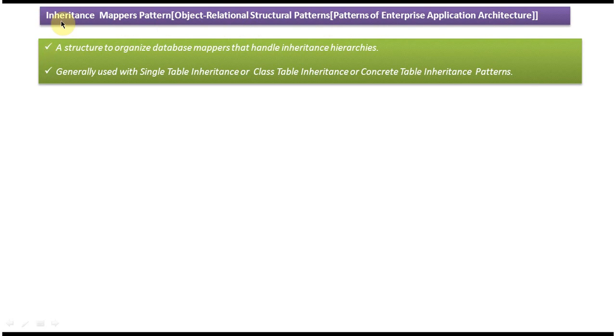The explanation of the inheritance mappers design pattern is: a structure to organize database mappers that handle inheritance hierarchies. This design pattern is generally used with the single table inheritance pattern, class table inheritance pattern, or concrete table inheritance patterns.